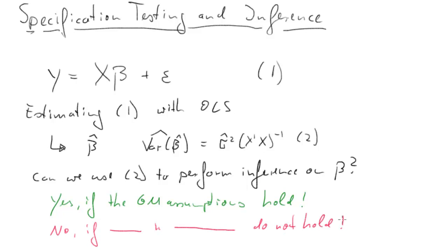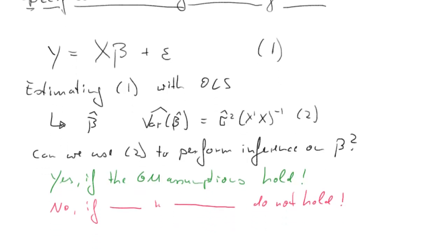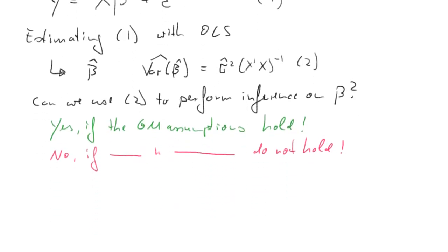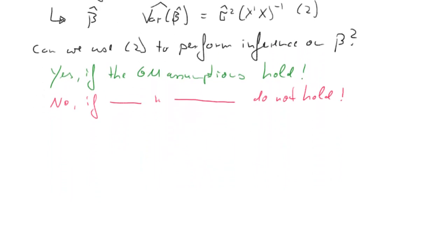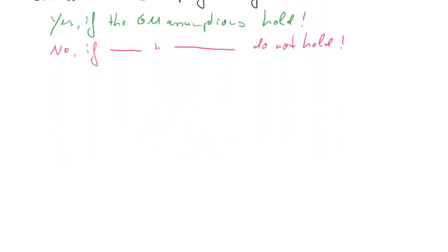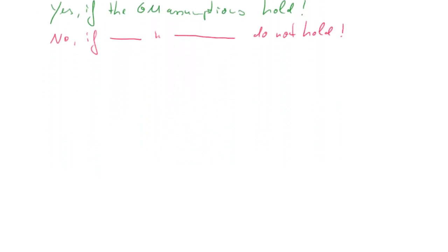So the question is then how do we test whether these hold? In particular, what I want to look at here is heteroscedasticity and autocorrelation. So we need to perform some diagnostic testing.